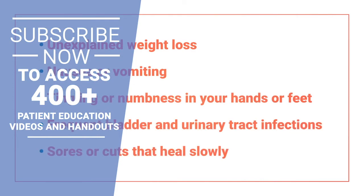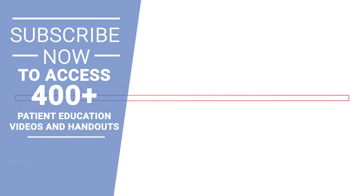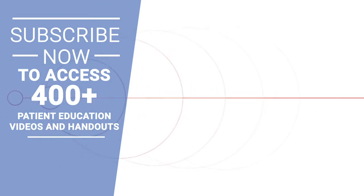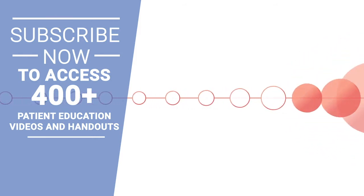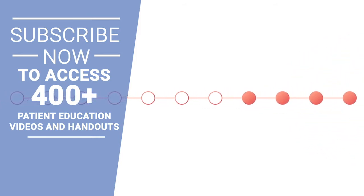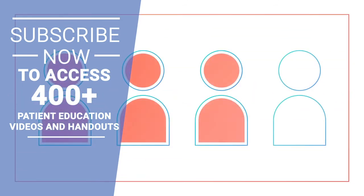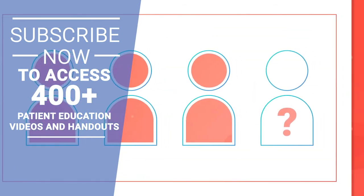Symptoms of type 2 diabetes often develop gradually. Some people with type 2 diabetes have very mild symptoms, or no symptoms at all, and can live for years without knowing they have diabetes. In fact, about one out of four adults with diabetes don't know they have it.